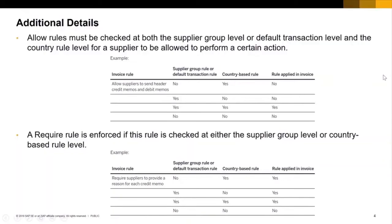The country-based invoice rules work in conjunction with the default transaction rules and the supplier group rules. These rule combinations work differently depending on whether it's an allow rule or a require rule. For an allow rule, both the supplier group or the default transaction level and the country rule file both need to allow the activity.